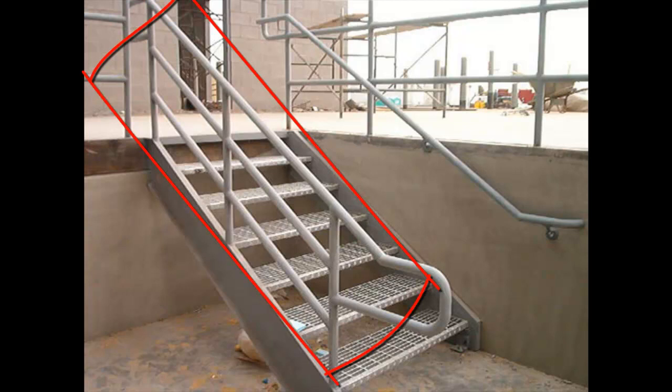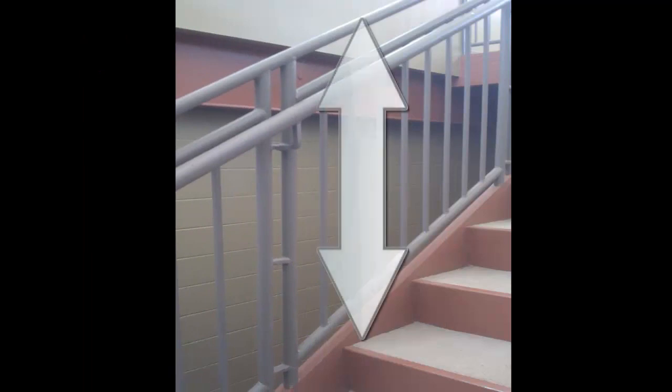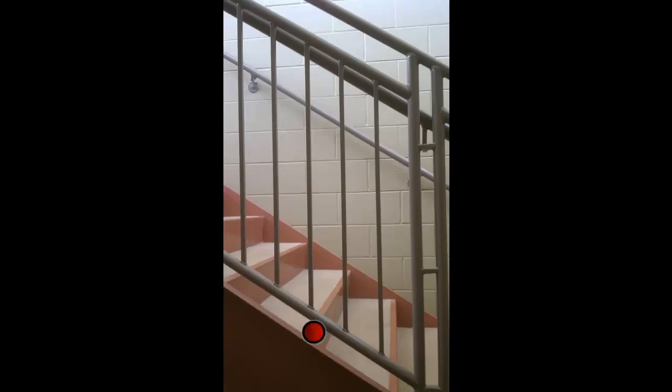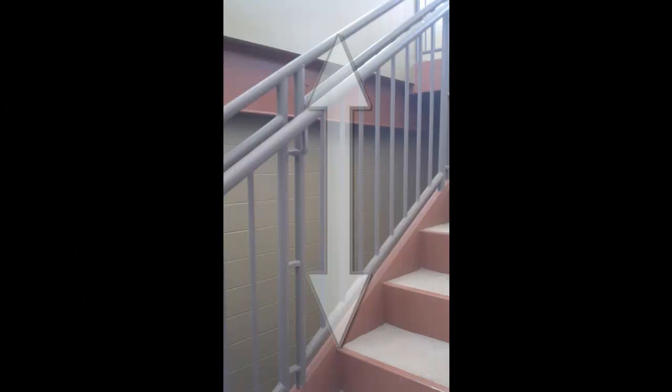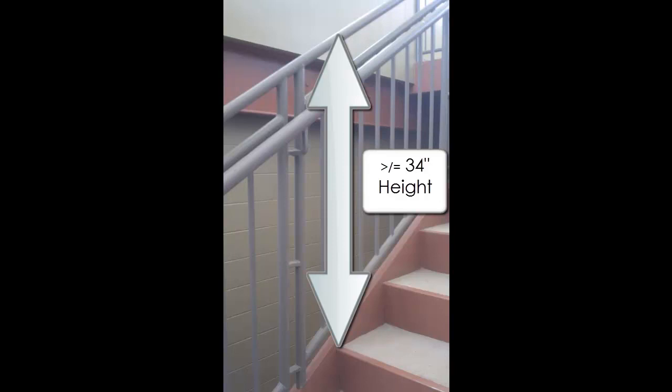Railings must meet three standards: overall height from the top of the tread, spacing between vertically and horizontally oriented balusters, and spacing between bottom of the rail and stair treads. The overall height of a railing may not be less than 34 inches, measured in a vertical fashion from the nose of the tread.